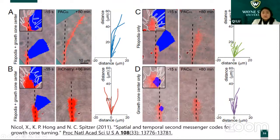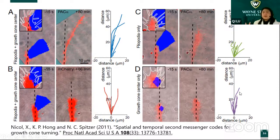Shining the light outside causes the growth cone to go there. But shining the light inside — just in the middle line, on top of the growth cone — there is no preference to grow in either direction.